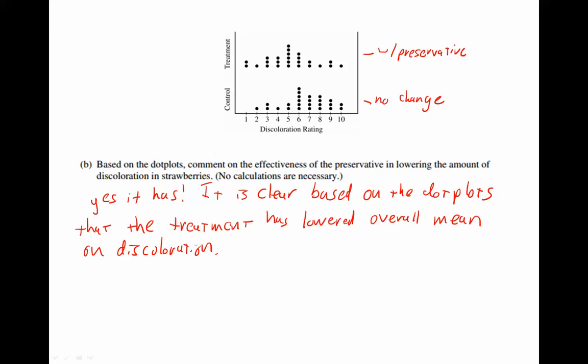It doesn't say calculations are necessary, so we don't need to give a specific amount that it has. It doesn't tell us that we need to look at medians or quartile ones or quartile threes. We can look at those, but we don't have to. As we have said, yes it has. And we've made a clear distinction that it has based on looking at the dot plots. This would be a full credit portion of this problem.